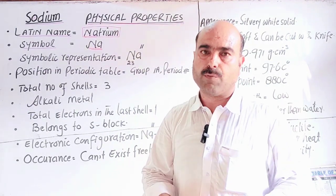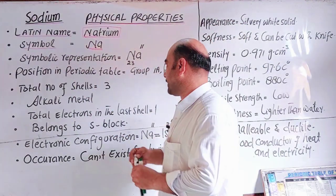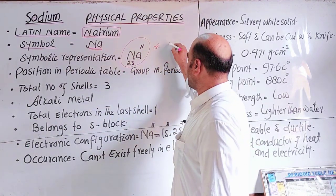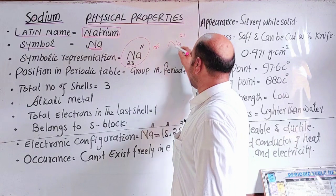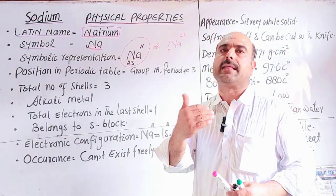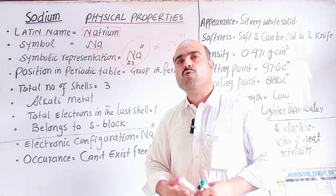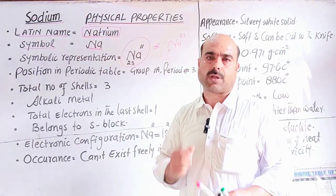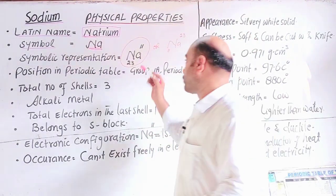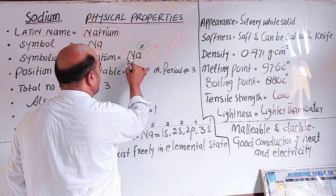The symbolic representation is Na, with atomic number 11 and mass number 23. You can write Na-23 and 11, or Na-11 and 23. The atomic number is written at the bottom and mass number at the top. Atomic number represents the number of protons, and mass number is protons plus neutrons.